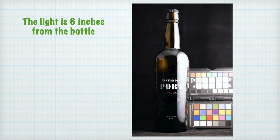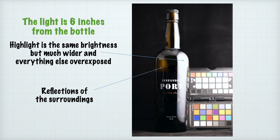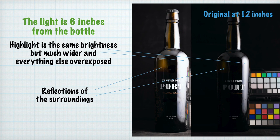But notice the highlight. It remains the same brightness as it was at twice the distance. Does this violate the inverse square rule? No. Instead of getting brighter, it got larger. Here we see both images, so you can see that the center of the highlight is the same brightness at both 12 and 6 inches from the bottle.